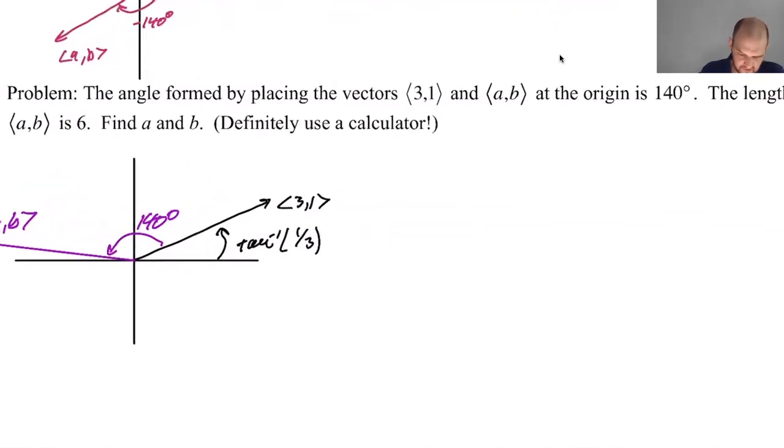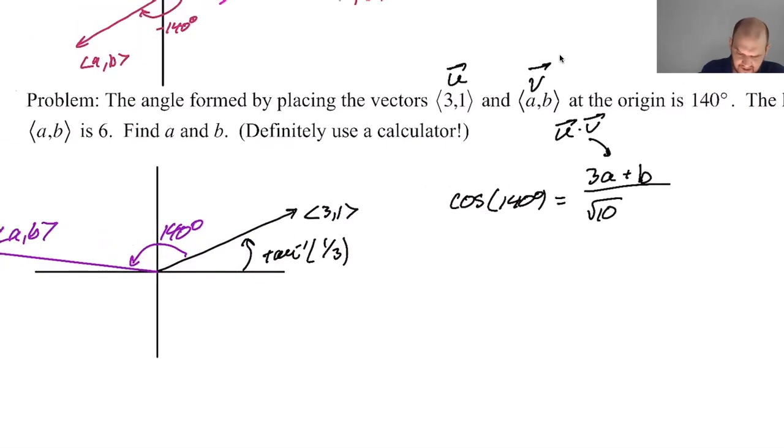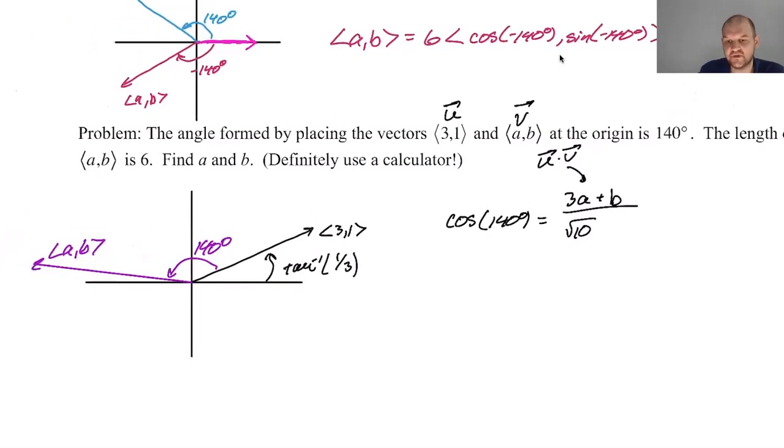So I know that the cosine of 140 degrees should be the dot product, which would be 3a plus b, which if we call this u and v, then this is u dot v. The magnitude of a is the square root of 10. The magnitude, not the magnitude of a, the magnitude of u is square root of 10. The magnitude of v is given. The magnitude of v is six. So I already know that. So I can just multiply by six. Okay.